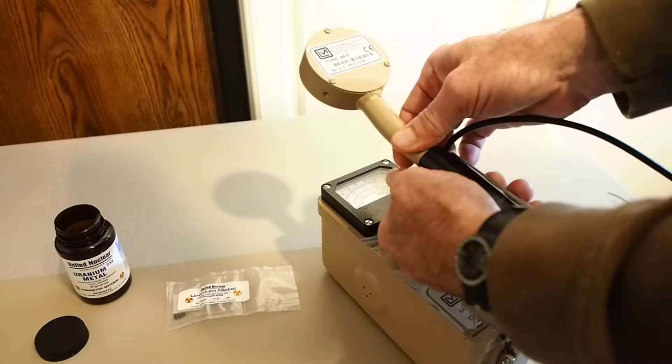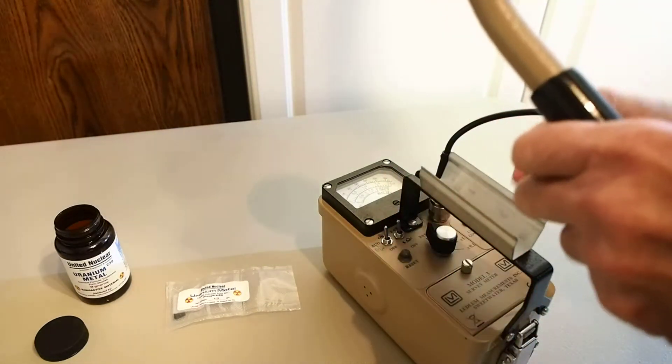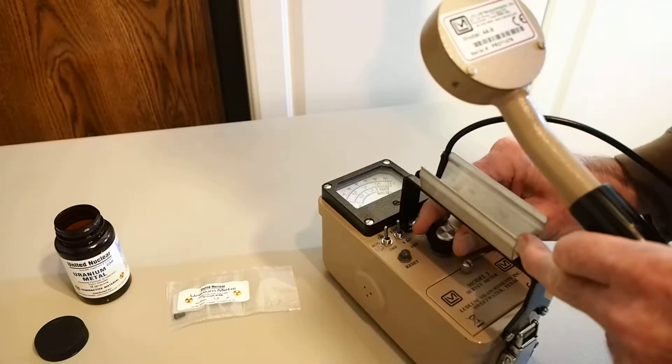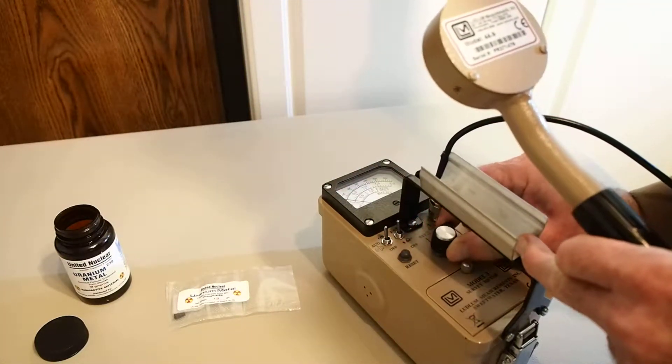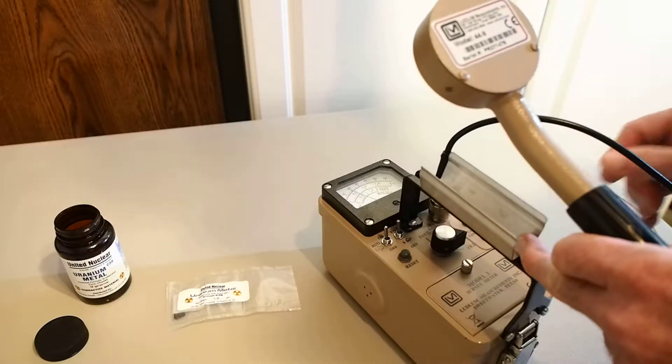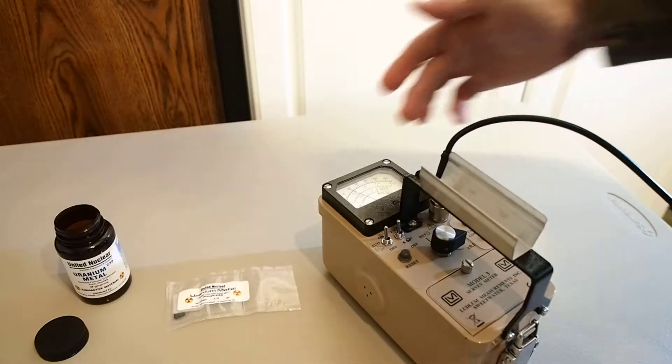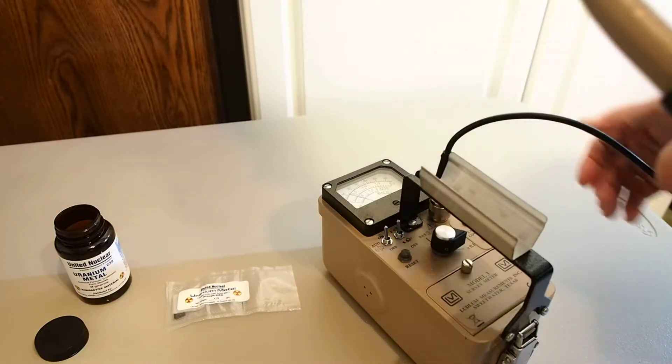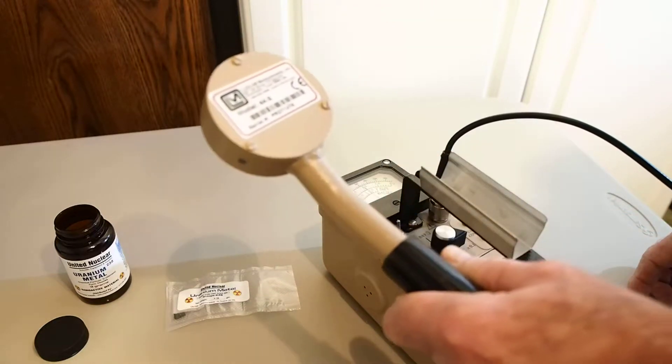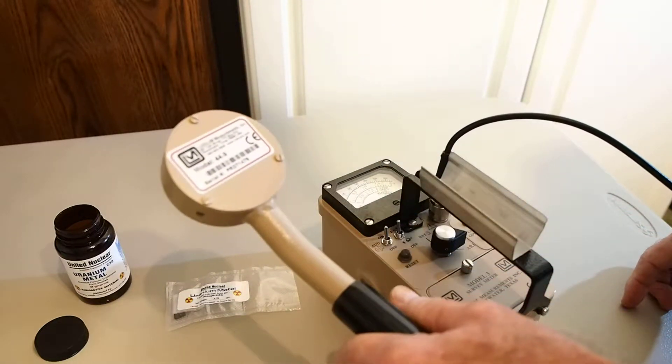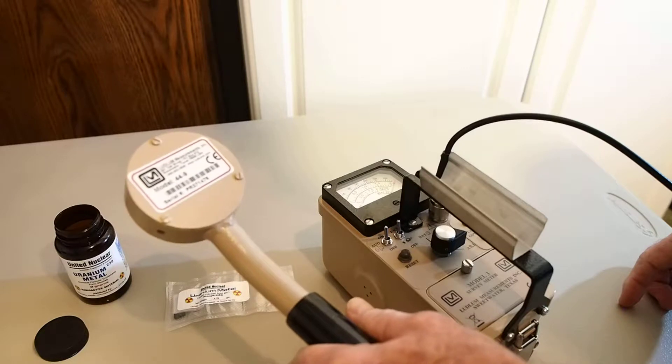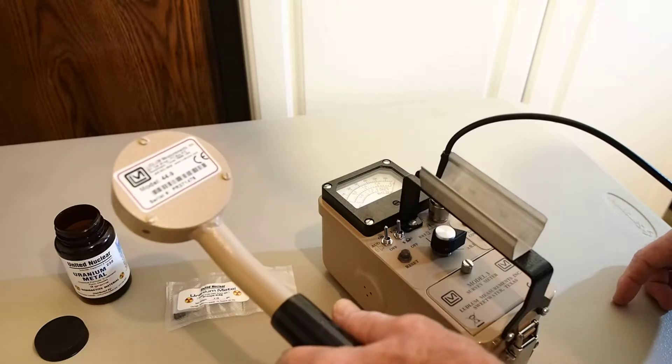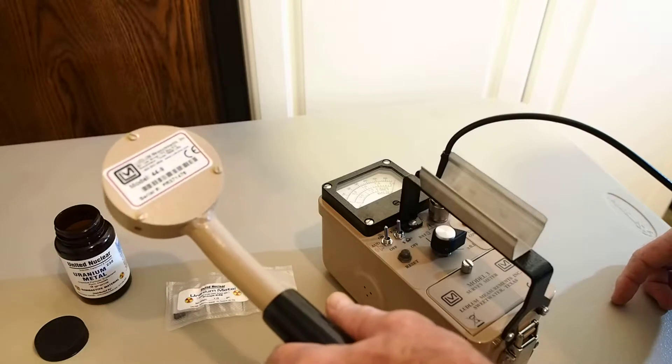So let's remove the detector from the instrument. We're going to reset our instrument and move the scale down to the 0.1 times setting, which at that scale will give us readings up to about 660 counts per minute. As we move the pancake relatively close to the specimen of U-238, we're already off scale, which indicates that it's emitting more than 660 counts per minute.